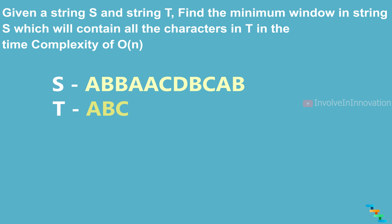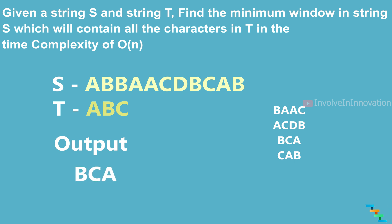In string s, the substrings which contain all the characters in t are: b, a, a, c with length 4; a, c, d, b with length 4; b, c, a with length 3; and c, a, b with length 3. The minimum window substrings which contain all the characters of string t are b, c, a or c, a, b.